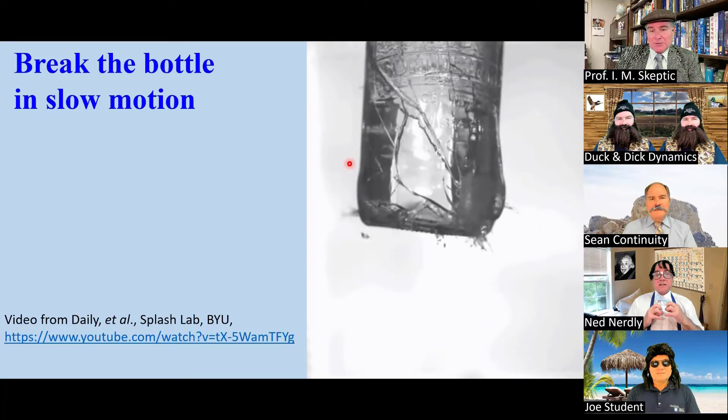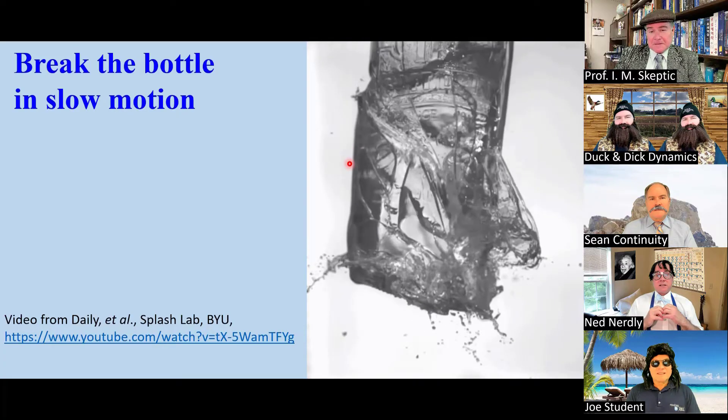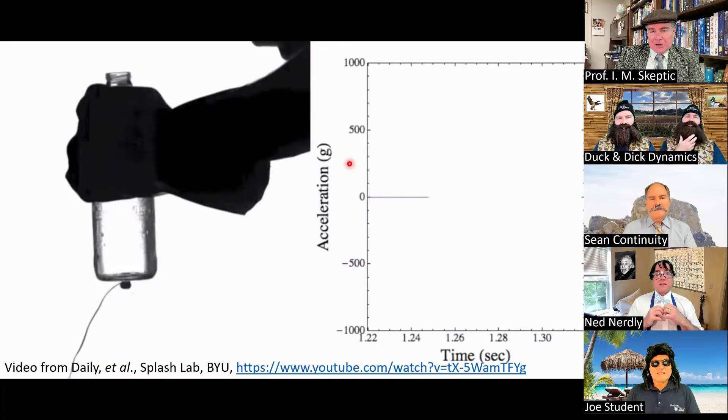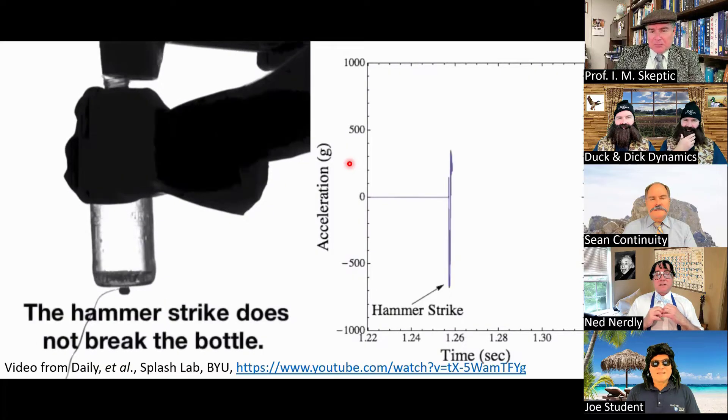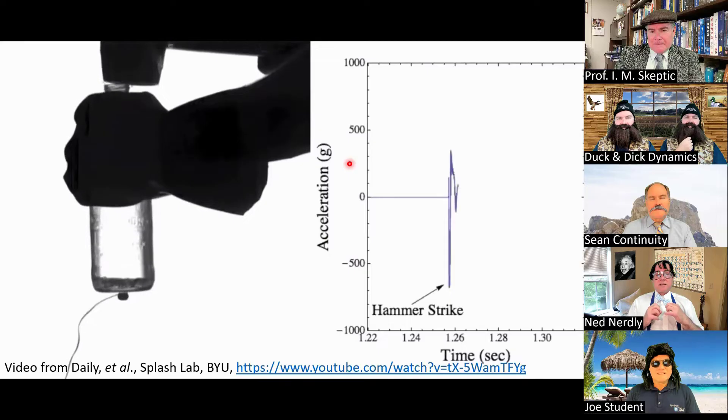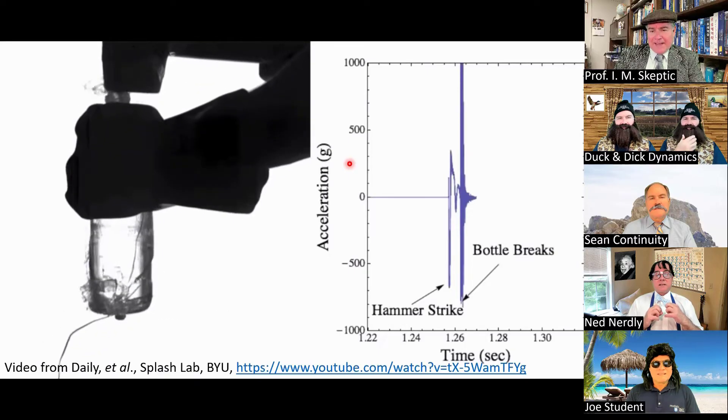You can see the cavitation bubbles form, collapse, and break the bottle. If you put an accelerometer on the bottle, you see that it doesn't break when the hammer strikes, but it does break when the cavitation collapse.